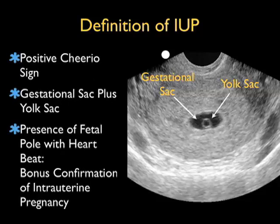The findings we define as indicative of an intrauterine pregnancy for an emergency physician sonographer are the presence of a gestational sac with a yolk sac inside. The yolk sac has a circular appearance that we call the positive cheerio sign. Gestational sac plus yolk sac is indicative of intrauterine pregnancy. Bonus points are given if you also see a fetal pole with a heartbeat for confirmation.